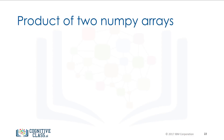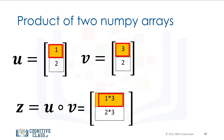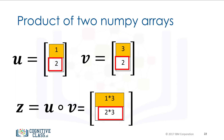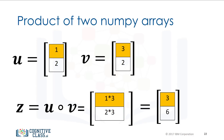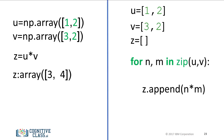Hadamard product is another widely used operation in data science. Consider two vectors u and v. The Hadamard product of u and v is a new vector z. The first component of z is the product of the first elements of u and v. Similarly, the second component is the product of the second elements of u and v. The resultant vector consists of the entry-wise product of u and v. We can perform Hadamard product with one line of code in NumPy, whereas it would require multiple lines using Python lists.